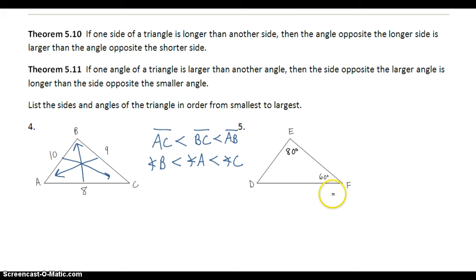In example number 5, I know 2 angles, so I know E, angle E is going to be bigger than angle F. The question is, what about angle D? Where does angle D fit into this mix? Well, to figure out angle D, all 3 angles have to be 180, so angle D has to be 40 degrees. So I can list my angles in order from smallest to biggest. Angle D followed by angle F followed by angle E.